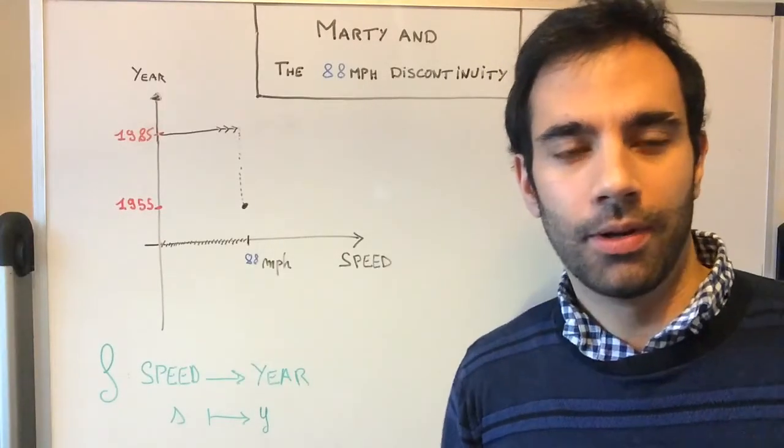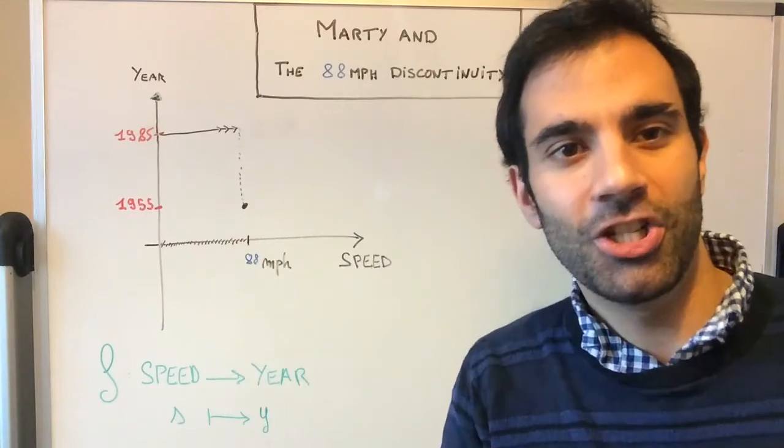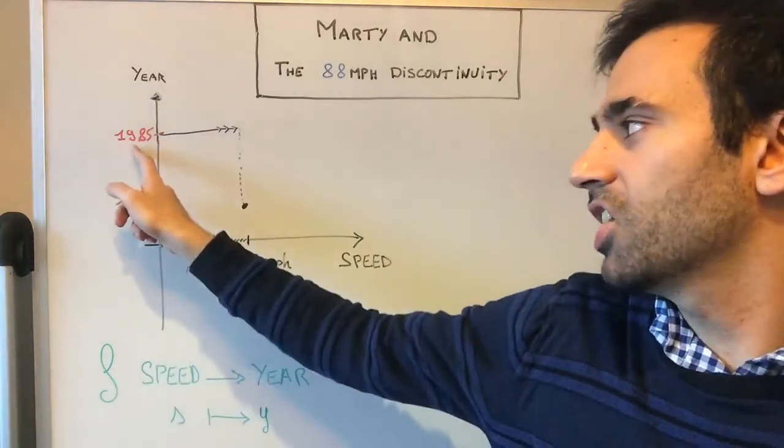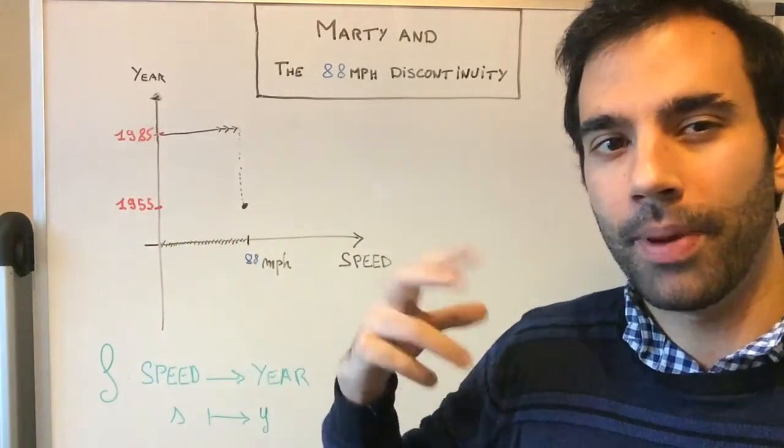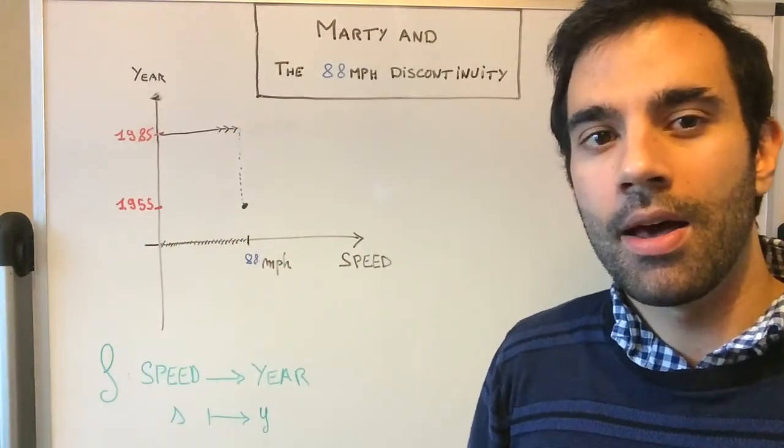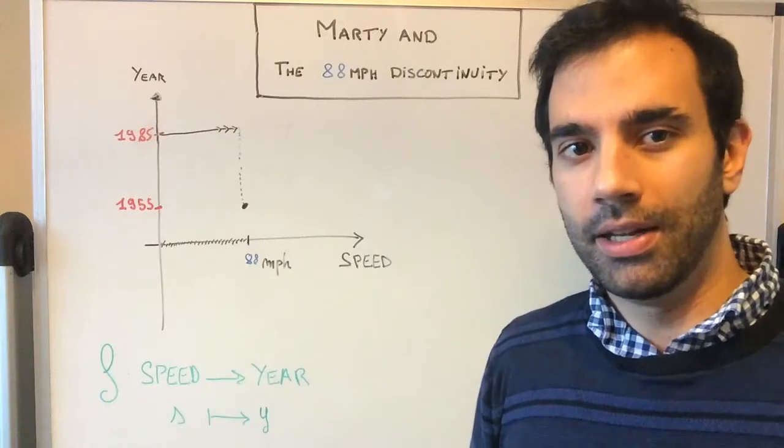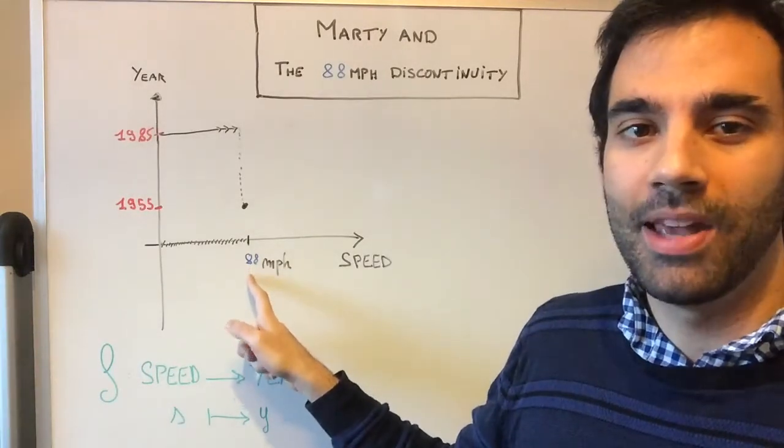Time-traveling! Wow, wow! So in that scene, Marty is going from 1985 to 1955 in the past, okay? And that transition is happening at 88 mph.